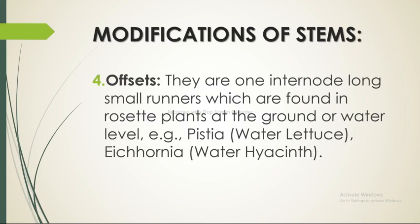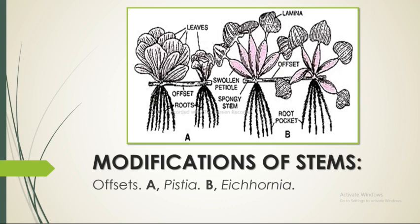Offsets are one-internode-long small runners found in rosette plants at ground or water level, for example Pistia (Water Lettuce) and Eichhornia (Water Hyacinth). In figure A, this is Pistia, which includes leaves, offset, and roots. In figure B, this is Eichhornia, which includes the lamina, swollen petiole, offset, spongy stem, and root pocket, as shown in the figure.